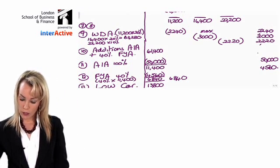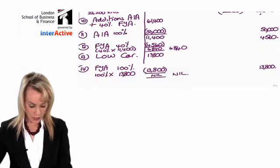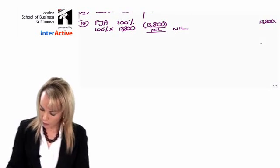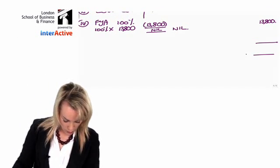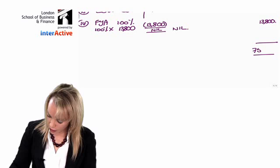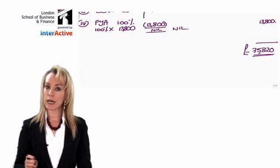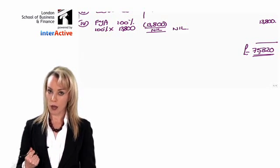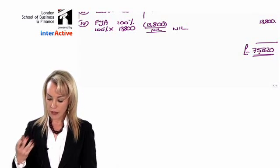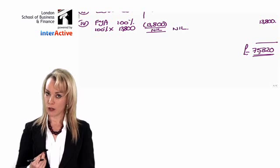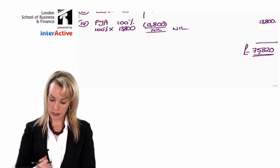You've now got all your allowances. Add up that right hand column and the total allowances are 75,820. That's the depreciation the company can claim, and that is going to reduce the company's trading profit as their allowable expense when calculating taxable profits.